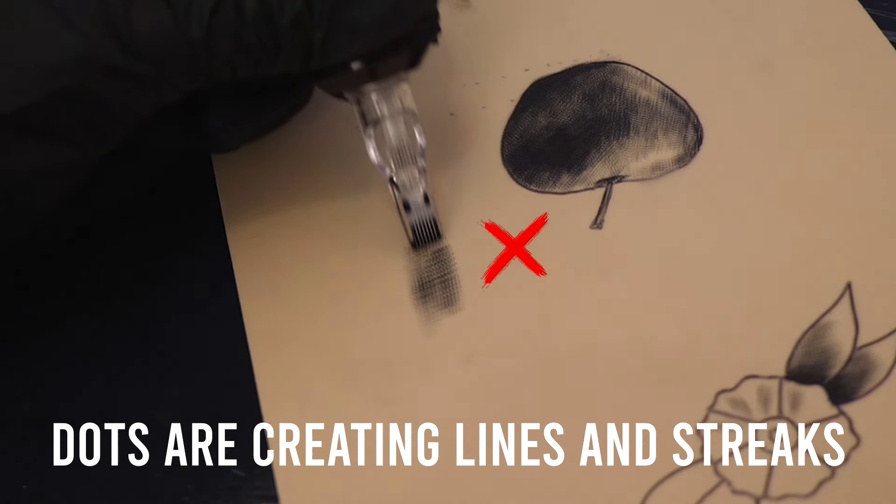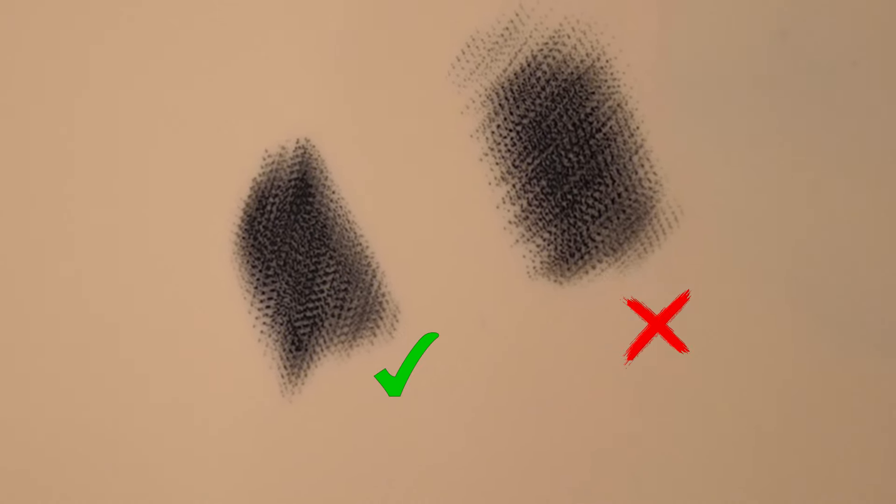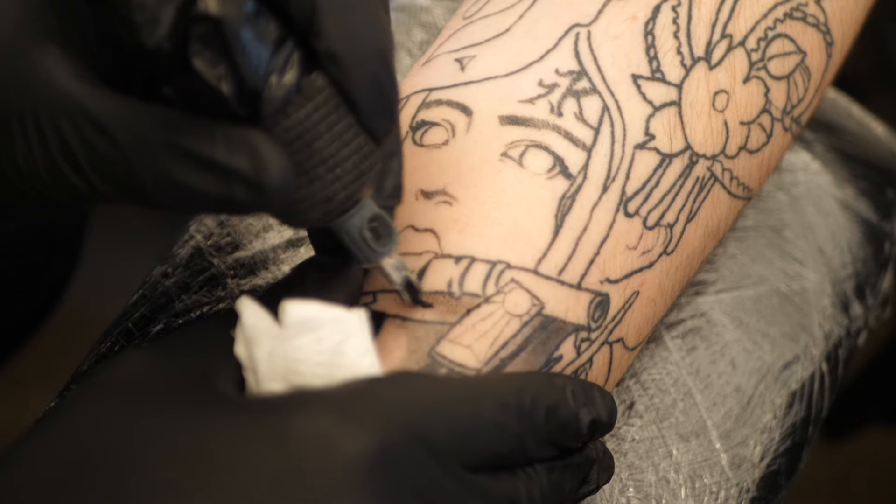See here the machine is just hitting the same area over and over and creating gaps or lines. You can see the dots on the left hand side are much tighter and smoother, so make sure you're applying this method to all of your tattoos.